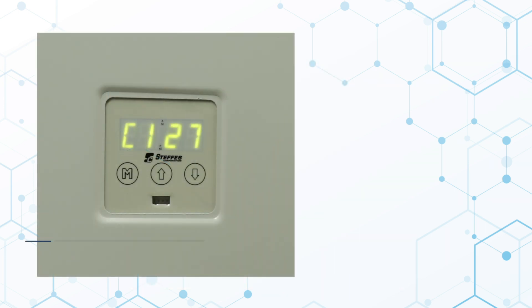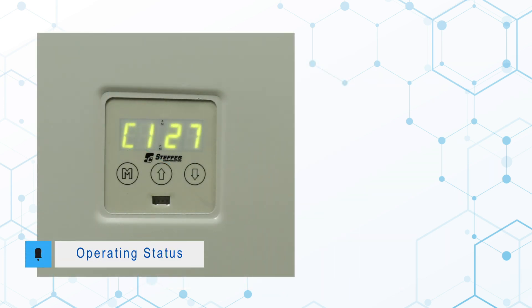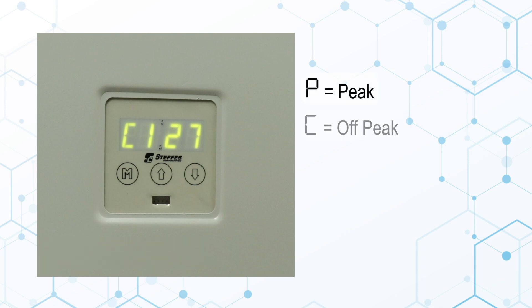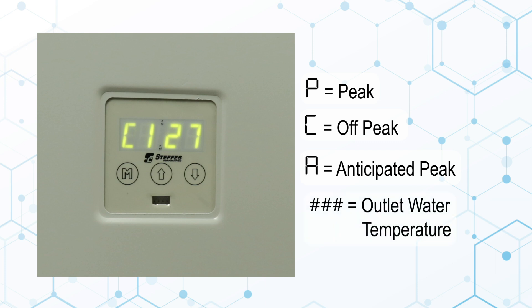The normal operating display on a residential hydronic system will show the current peak mode status. P indicates the system is in a peak period, C indicates a charge period, and an A indicates an anticipated peak period, if applicable. The number shown next to the peak status indicates the current outlet water temperature.